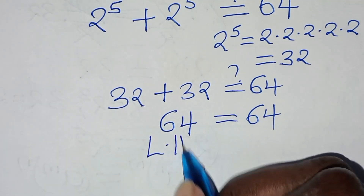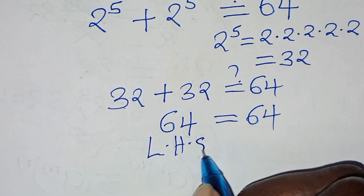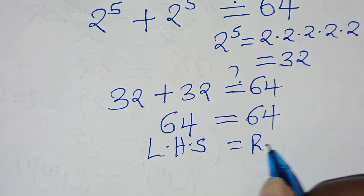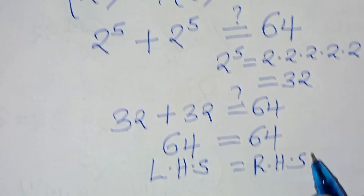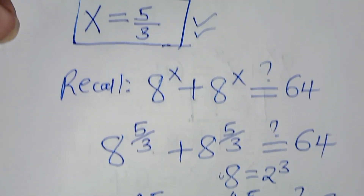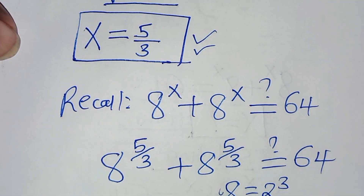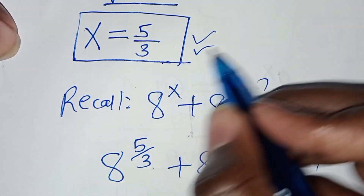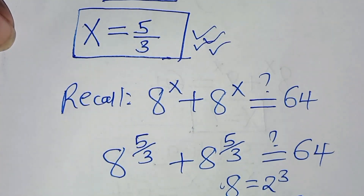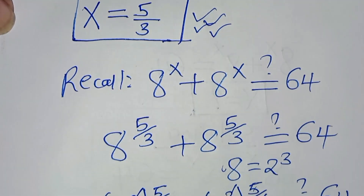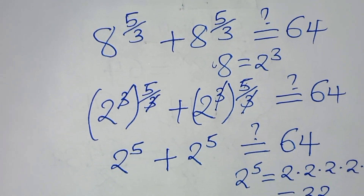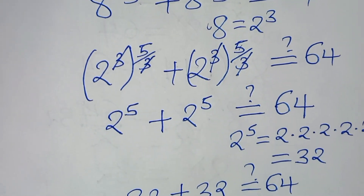So this implies that the left-hand side is equal to the right-hand side. And this implies that x, which is equal to 5 over 3, satisfies the equation. If you liked this video, please like and subscribe. See you in the next video.